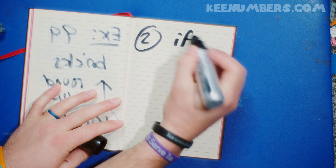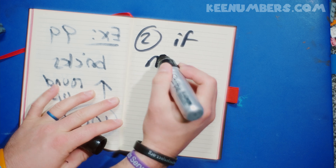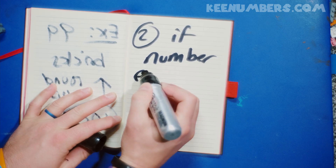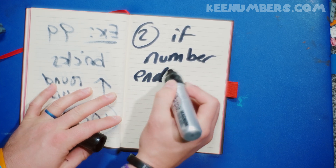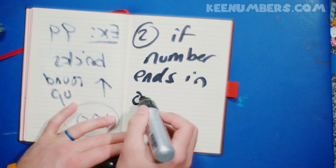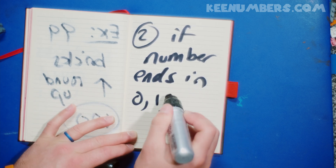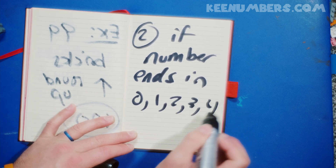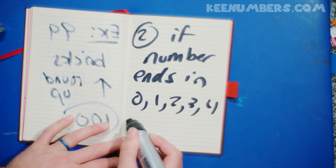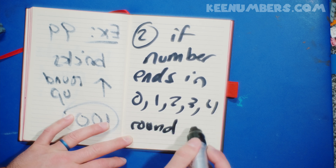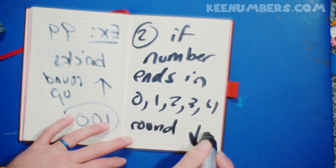If the number ends in zero, one, two, three, or four, we're going to round down.